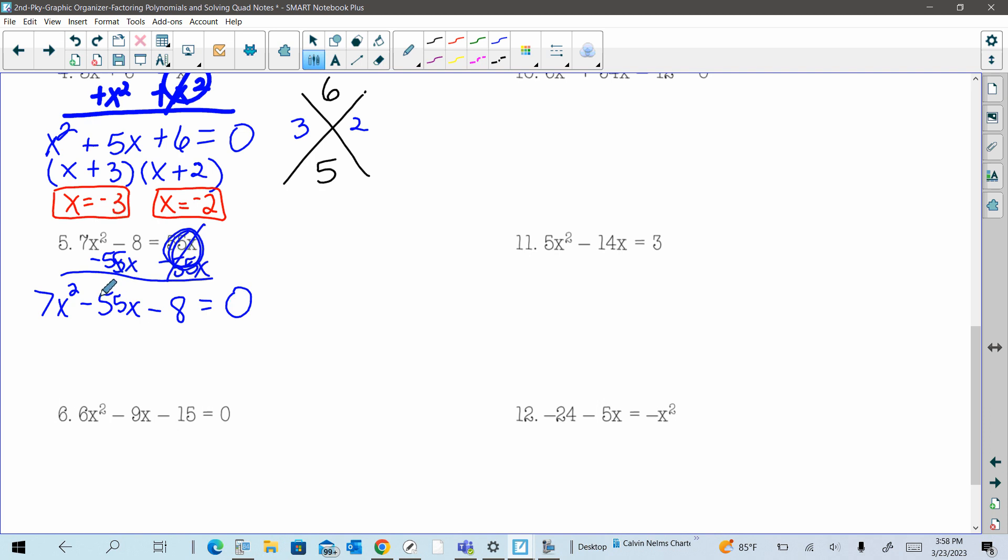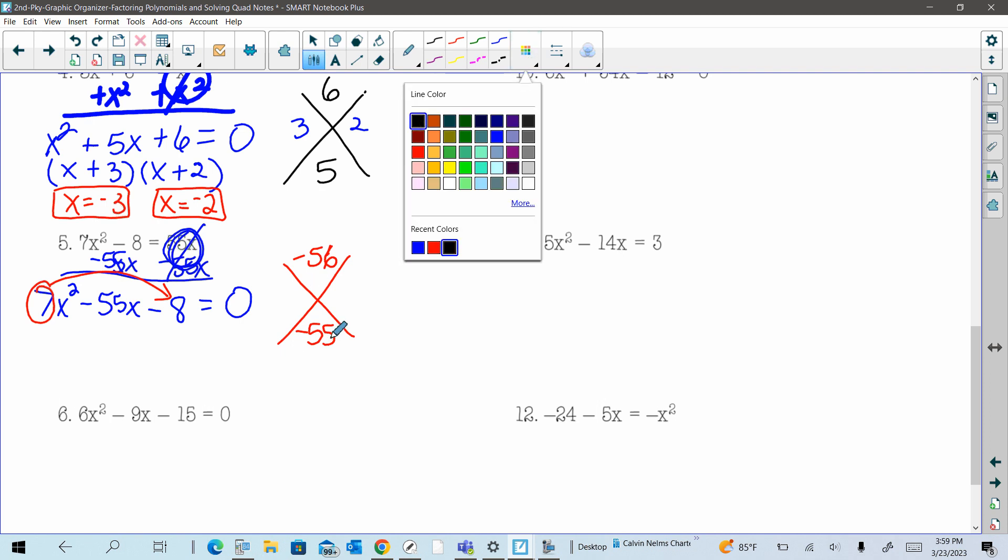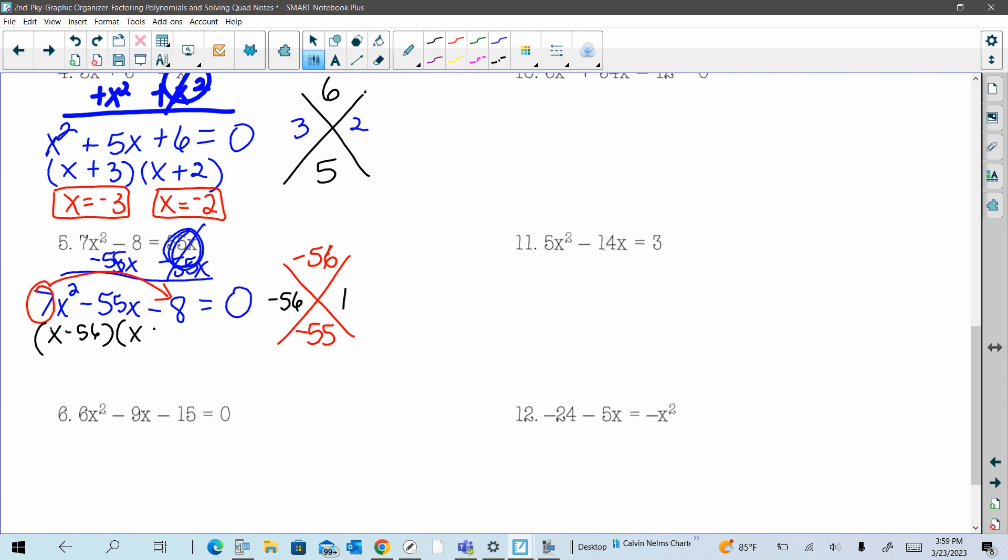Now the difference between this trinomial and the one we had up here is now we have a coefficient, a number in front of the x squared. So we got to slip and slide and multiply. So in my x puzzle, I'm now going to have a negative 56 and a negative 55. So we're looking for factors of a negative 56 with the sum of a negative 55, would that be negative 56 and a positive one? So in my grouping, I'm going to have x minus 56 and x plus one.